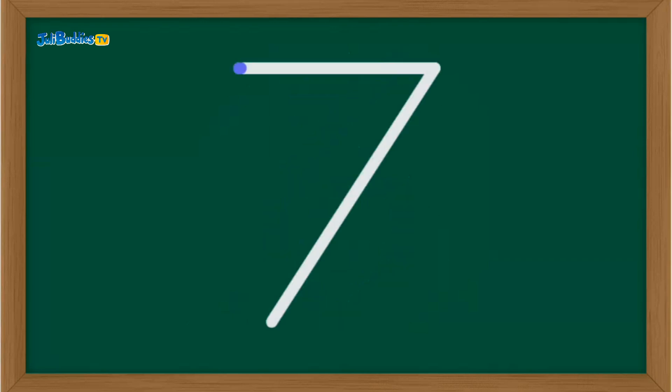Next up, number seven. Draw a straight line across the top, then a slanting line all the way down. Good job! That's number seven.